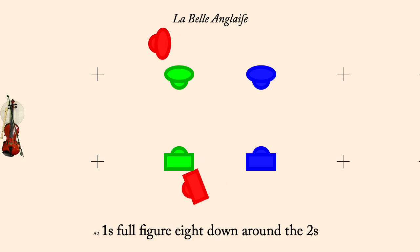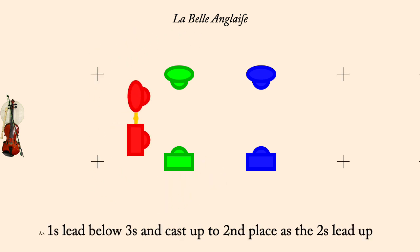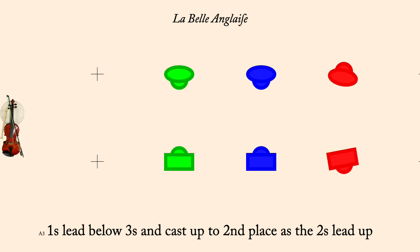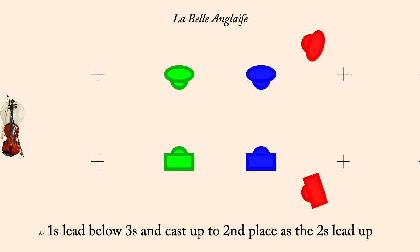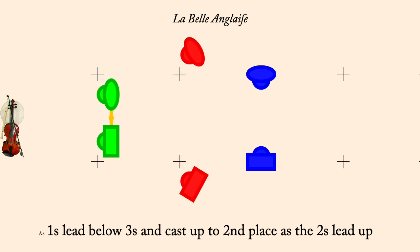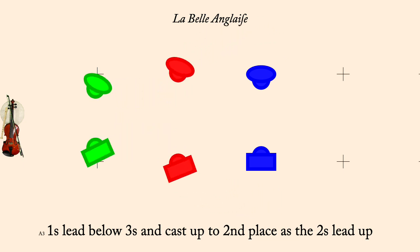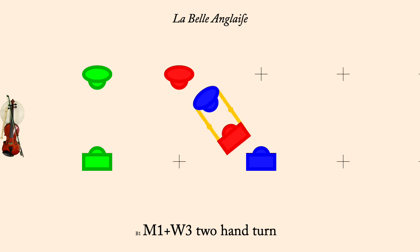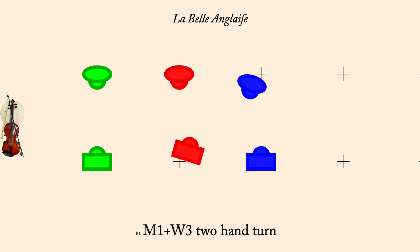Ones full figure eight down through twos. Ones lead below threes and cast to second place. Man one, woman three, two-hand turn. Woman one and man three, two-hand turn.